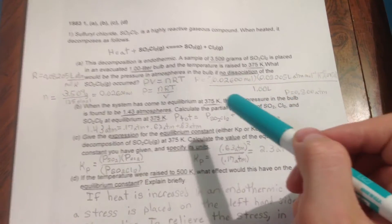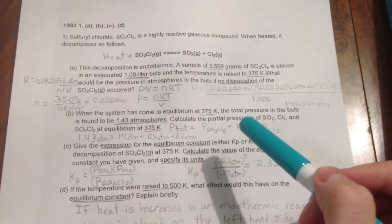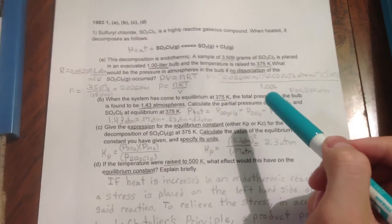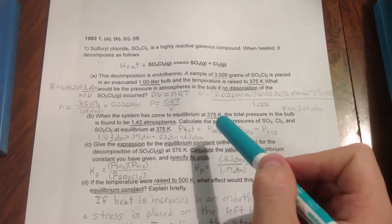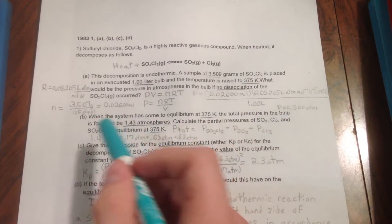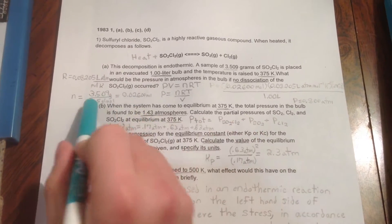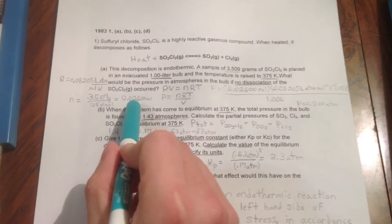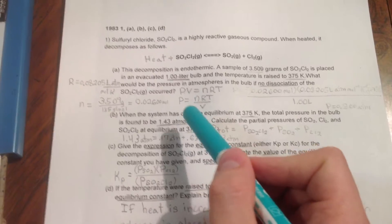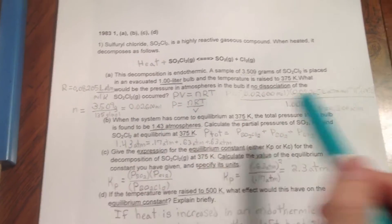For this question, all we need is two things. One, to change 3.509 grams of SO2Cl2 into moles of SO2Cl2, done here. And two, PV equals NRT.